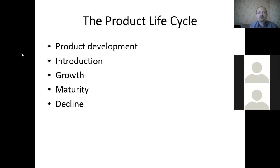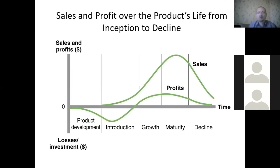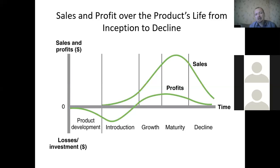Taking into account everything mentioned, it is possible to define the product life cycle, which contains: product development, introduction, growth, maturity, and decline. The curve shows sales and profits over time. At the product development stage, there are no product inflows, so it is not possible to get cash inflows, and this time interval is connected with losses.